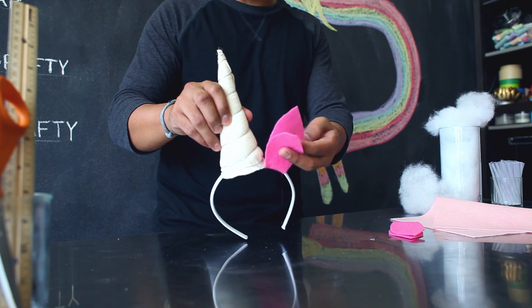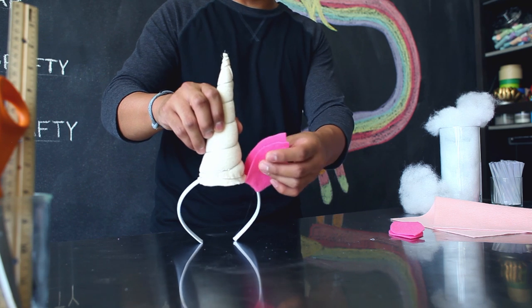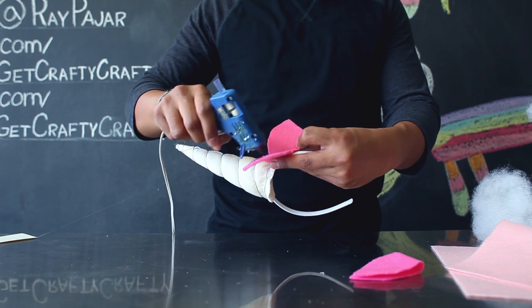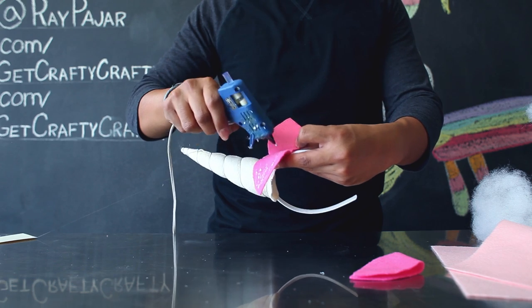Be very careful when you're doing this since there is hot glue that's going to be right at the base of your headband. After the glue has dried on the base of your ears, glue both pieces together.